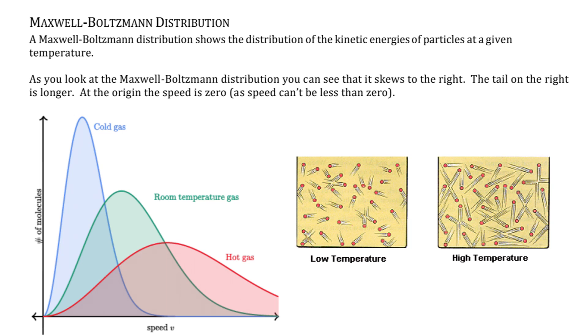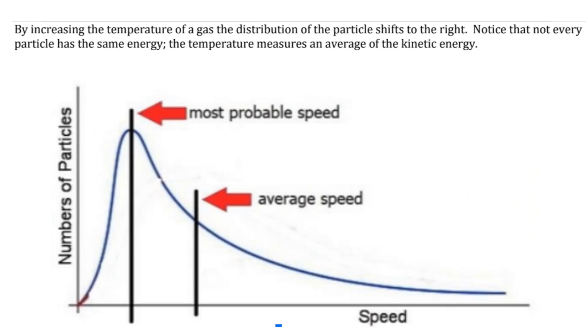If you bump up the temperature, you increase kinetic energy for all the molecules, so the average speed will be greater for more molecules. By increasing the temperature of a gas, the distribution of the particle shifts to the right. Notice that not every particle has the same energy. The temperature measures an average of the kinetic energy.